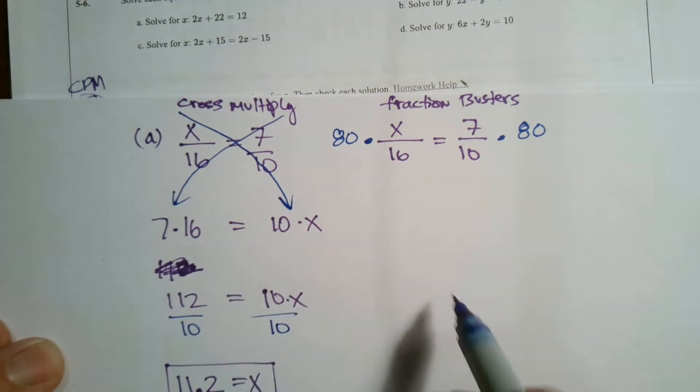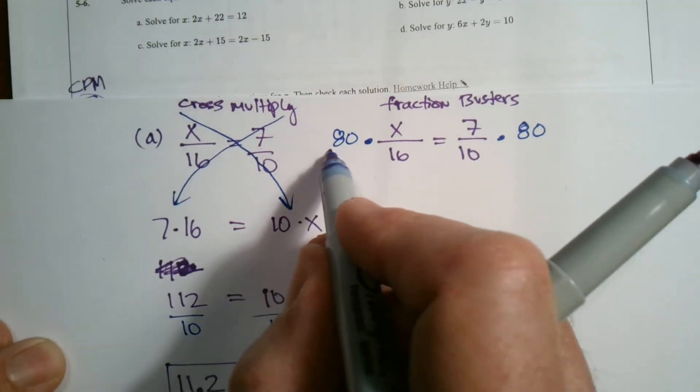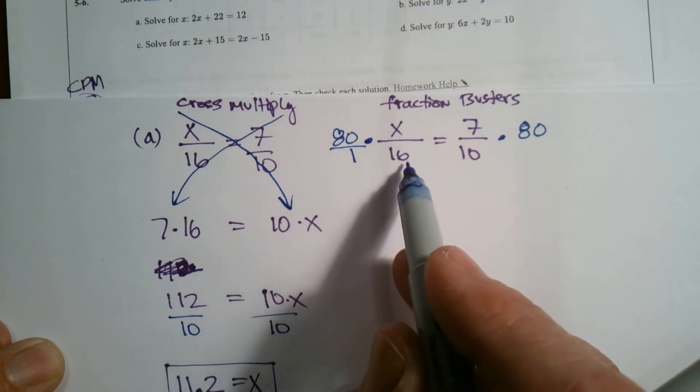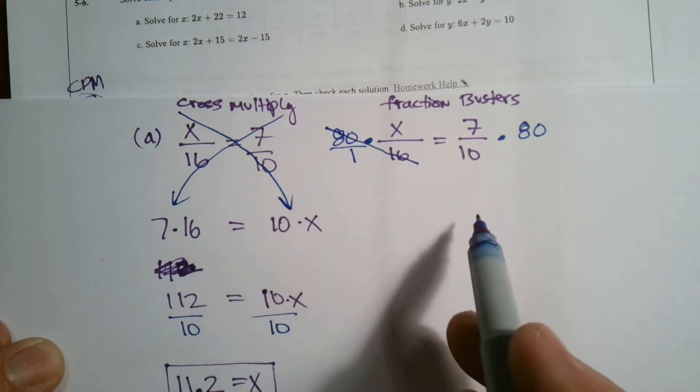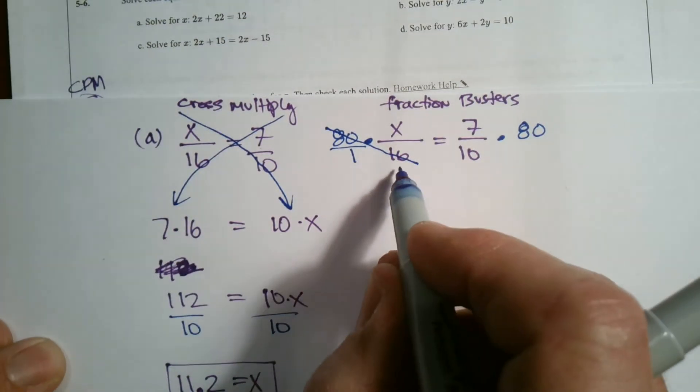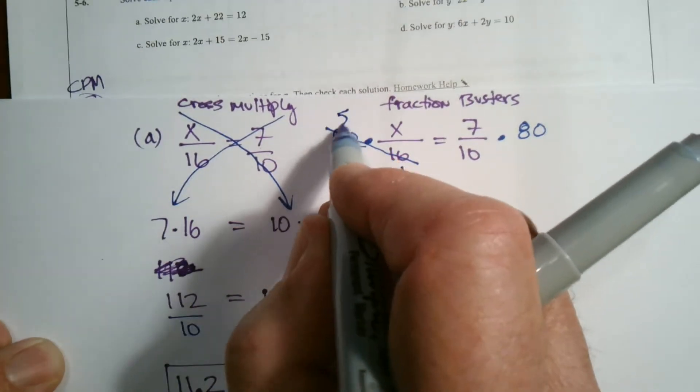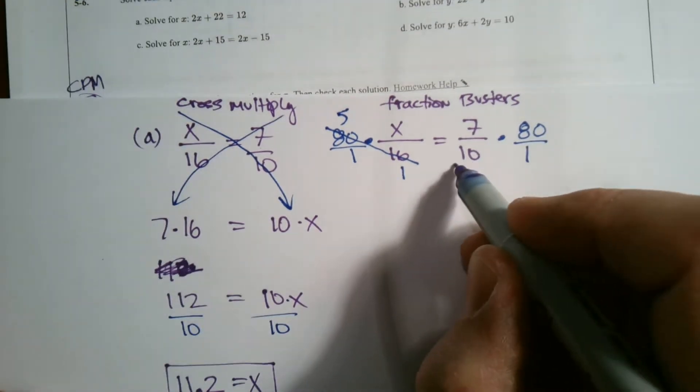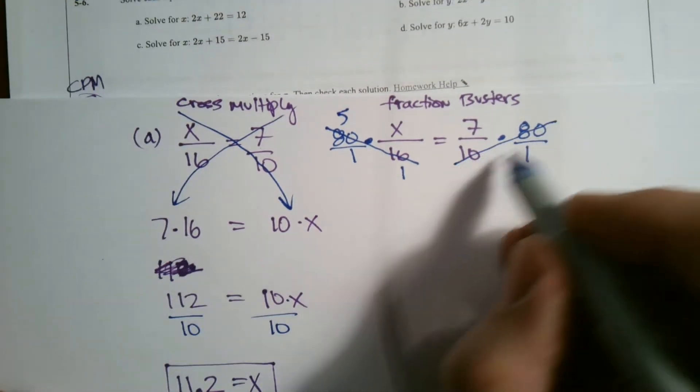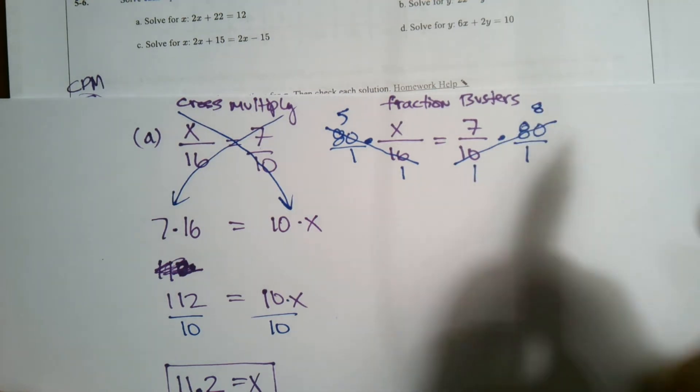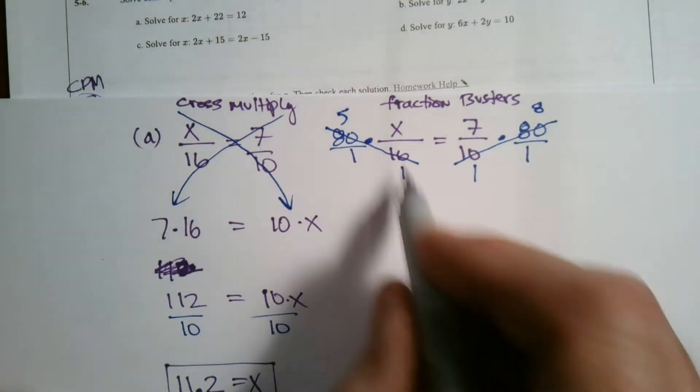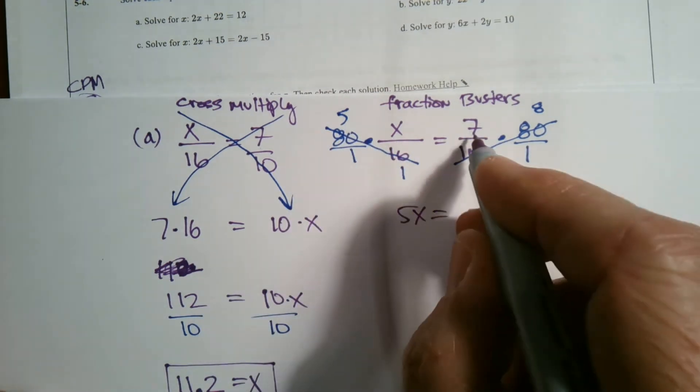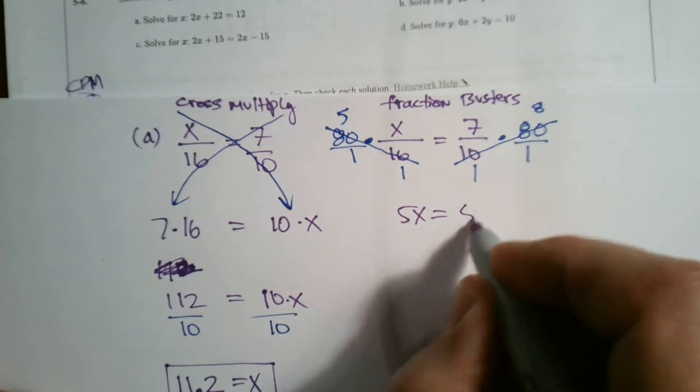So why does this work? Well, if we look and I multiply by 80, what's really happening here is I'm saying 80 times X over 16. And we can simplify that fraction, right? Cross simplify. That becomes a one and that becomes a five. Do the same thing over here. Cross simplify, diagonally simplify. That becomes a one, that becomes an eight. So what do I have now? I have five X is equal to five times X, five X is equal to seven times eight, which is 56.